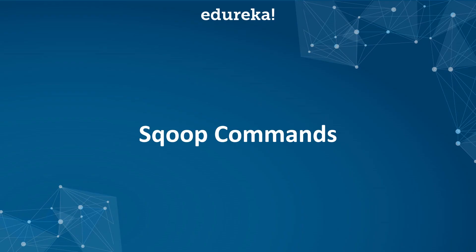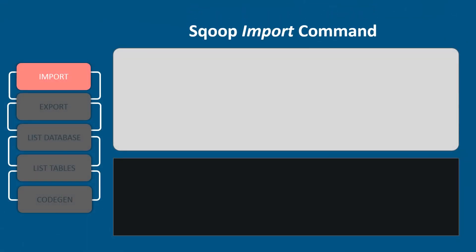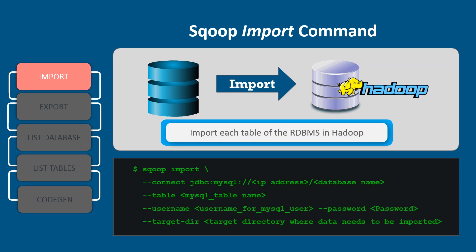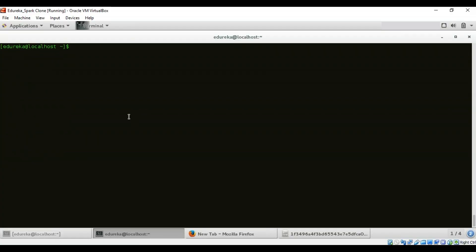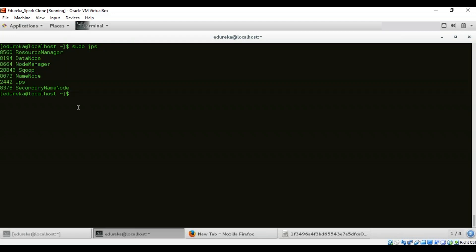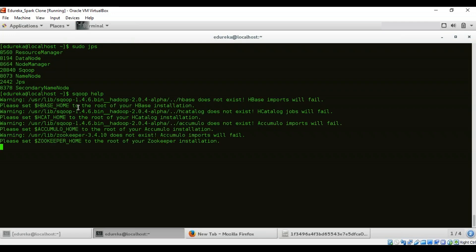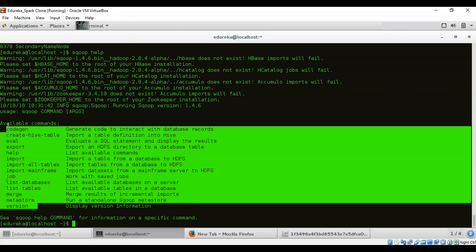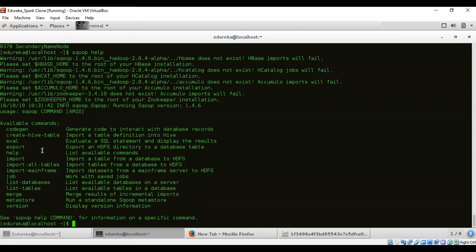Now let's execute some Sqoop commands. For Sqoop import, you provide the connection for MySQL, your IP address, database name, table name, MySQL username, optionally a password, and a target directory. I'll open my terminal and check whether all Hadoop daemons are up and running. All daemons are up, and executing 'sqoop help' shows all available commands and confirms Sqoop is properly installed.